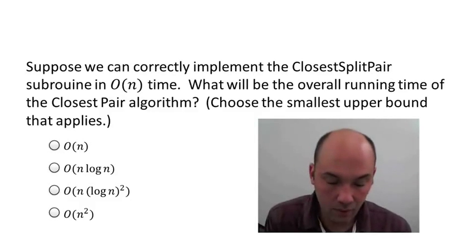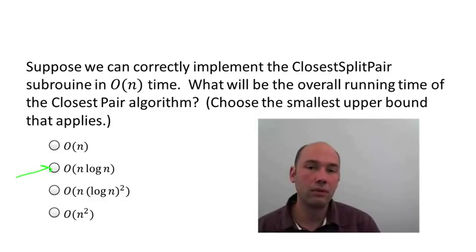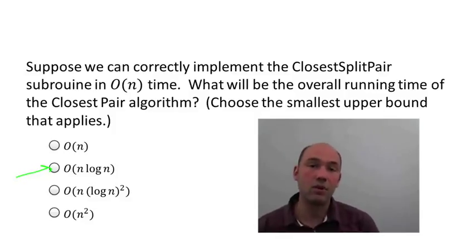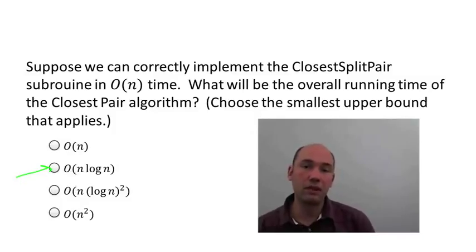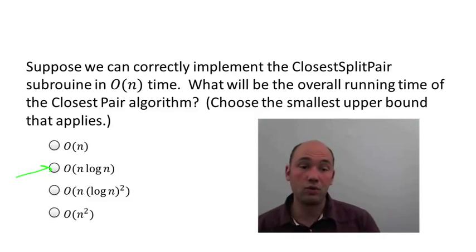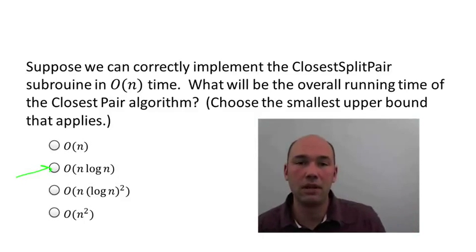What about the running time? The running time of closest pair is partly determined by the running time of closest split pair. By analogy with merge sort and counting inversions: the preprocessing costs N log N; then the recursive algorithm makes two recursive calls each on half the input, and does linear work outside those calls. The exact same recursion tree that proves N log N for merge sort proves N log N here as well. So the goal should be to have a correct linear time implementation of the closest split pair subroutine — if we achieve that, we get the desired N log N algorithm.